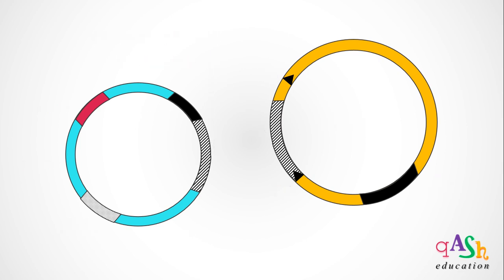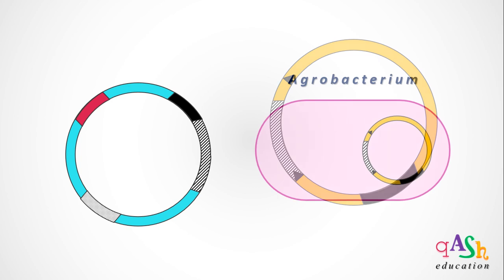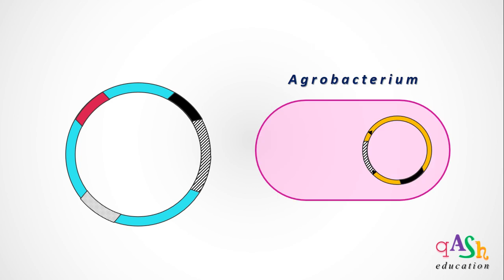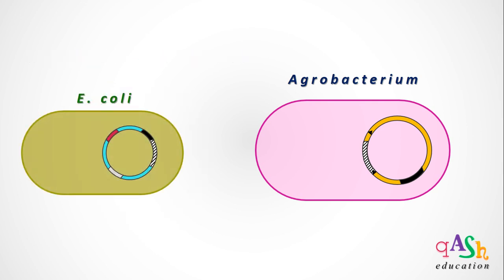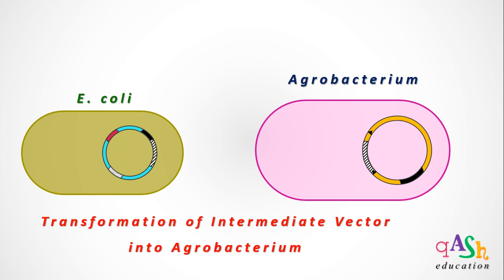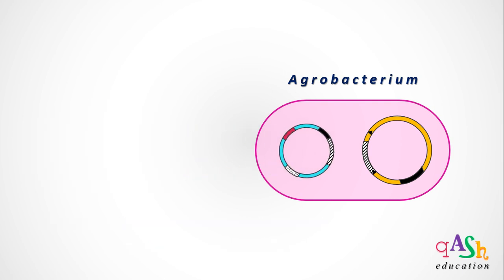The disarmed Ti plasmid is maintained and cultured in agrobacterium cells. The intermediate plasmid is a type of modified E. coli plasmid and therefore it is maintained in E. coli cells. For the process to begin, the intermediate plasmid must be transformed from E. coli into the agrobacterium cells. This gives rise to transformed agrobacterium cells that now carry two plasmids, or the plasmid pair.